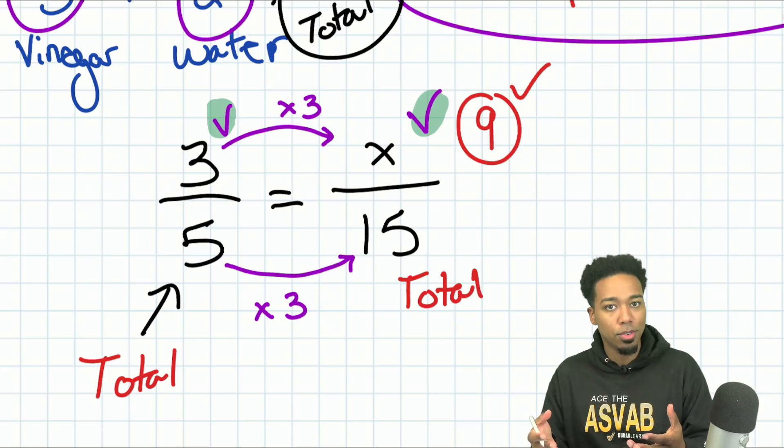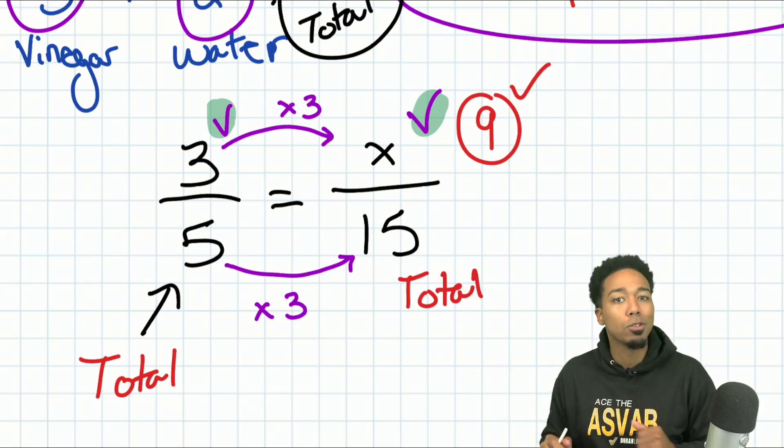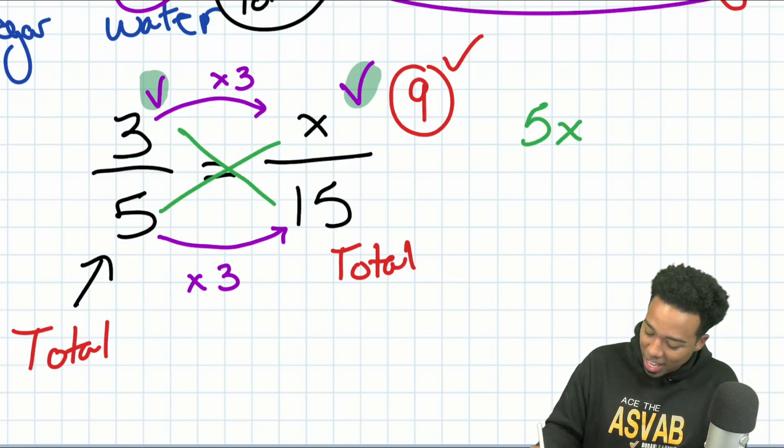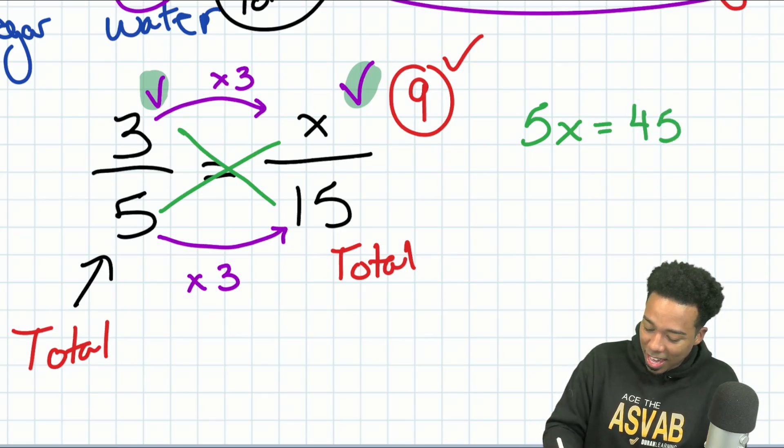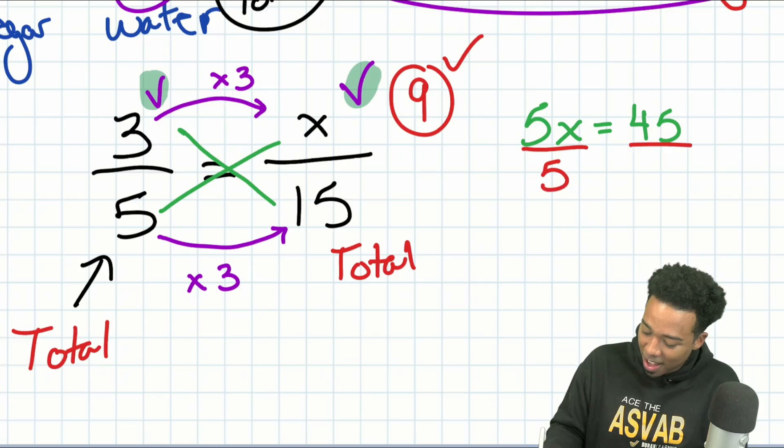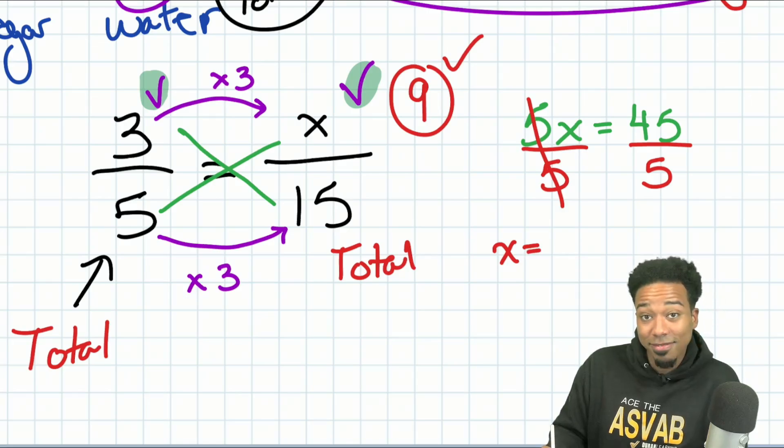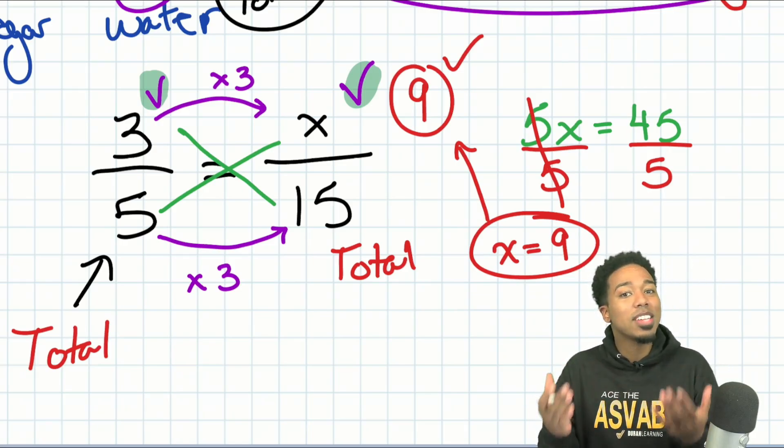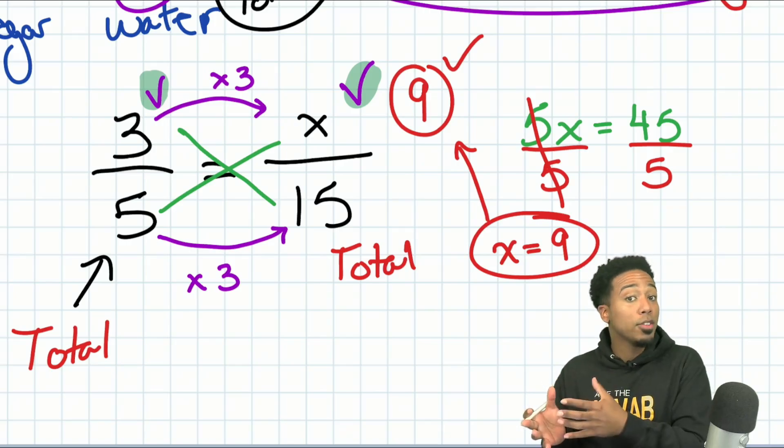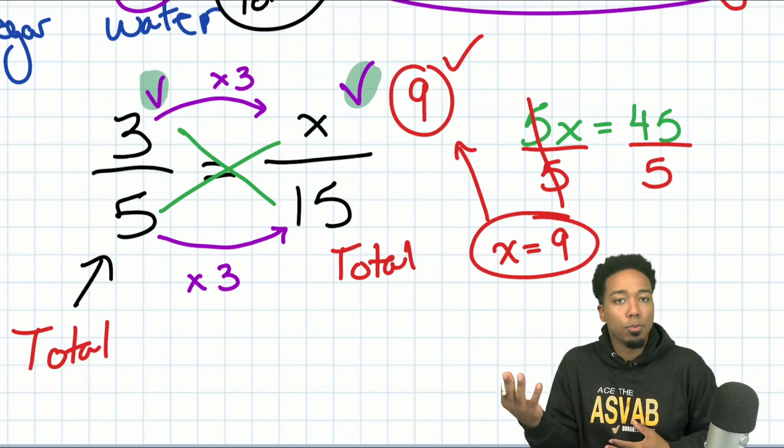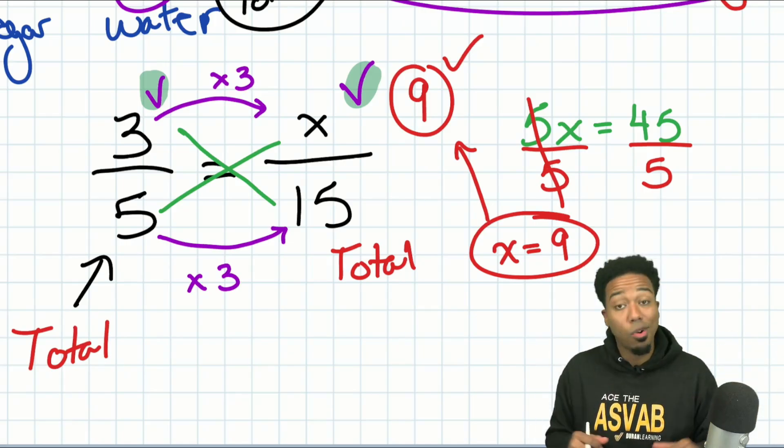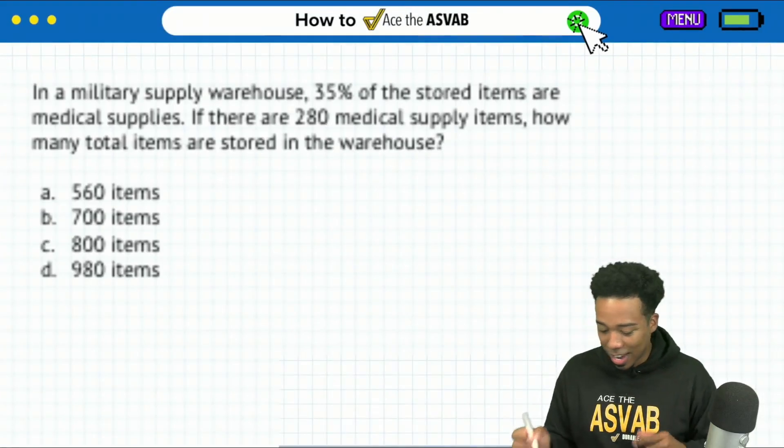But let me prove that to you by going ahead and cross-multiplying and dividing. And so we have five times X, that's five X. Three times 15, that's going to be 45. And then the last thing we'll do is divide both sides by five, right there and there, canceling out, giving us X equals what? Nine. And look at that. I told you it would be the same exact answer because remember that as long as you're comparing the same things in the same way, cross-multiplication and division, or just understanding the comparison of the ratios, it works. So don't believe me, let's go ahead and try this next one out.